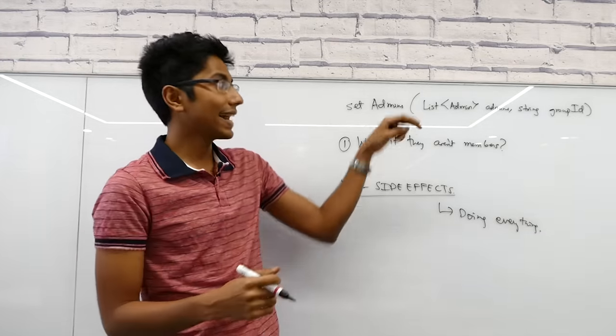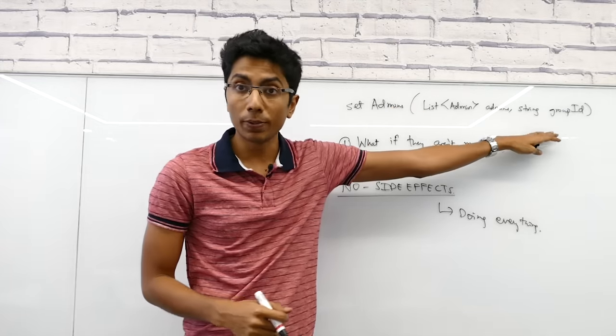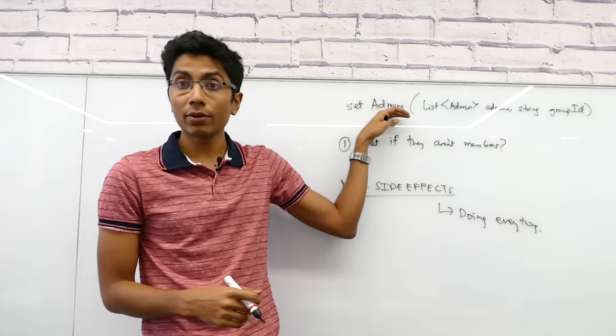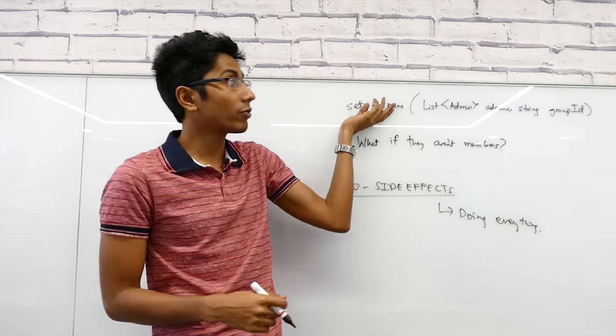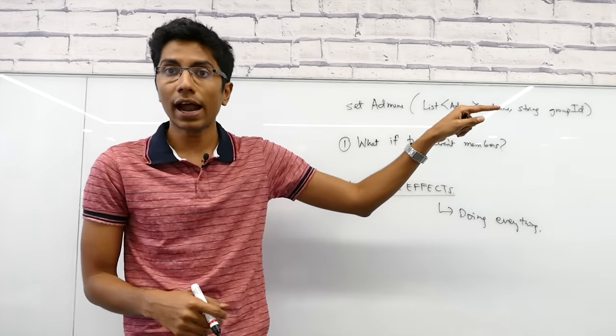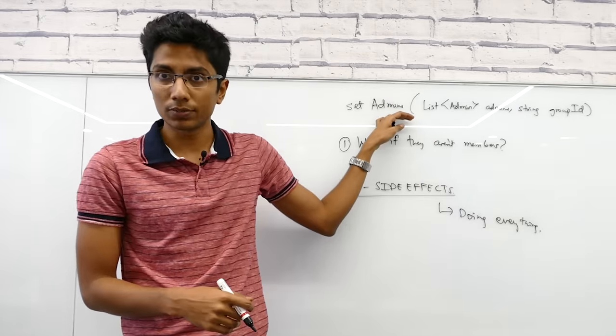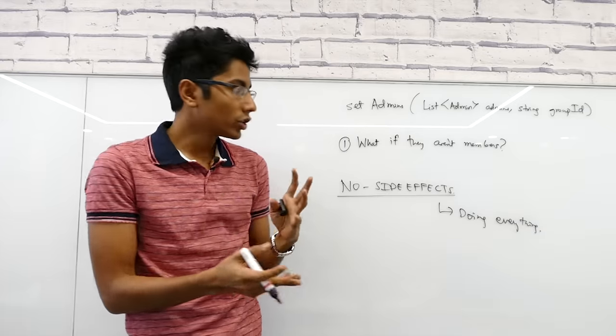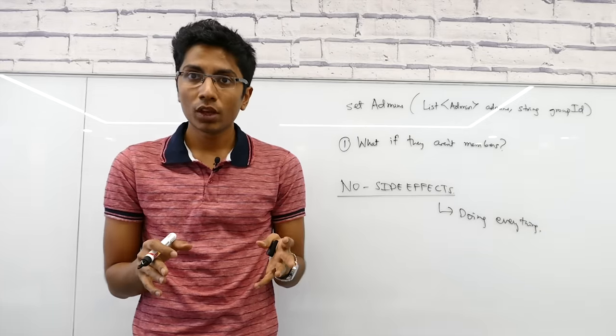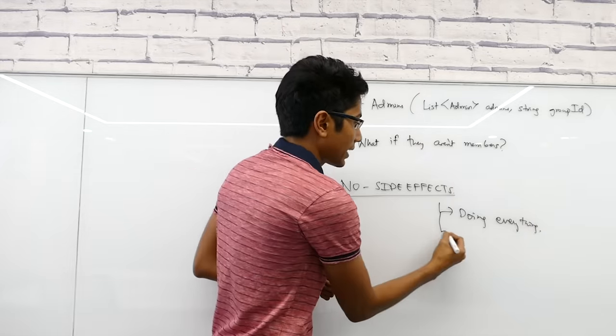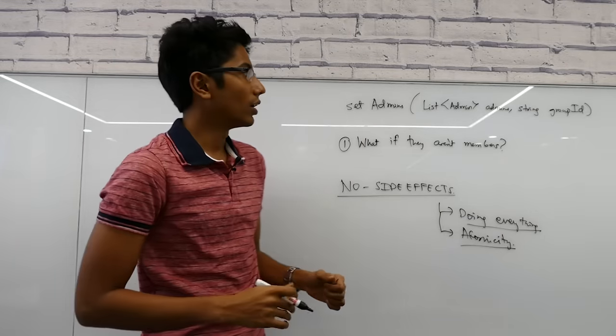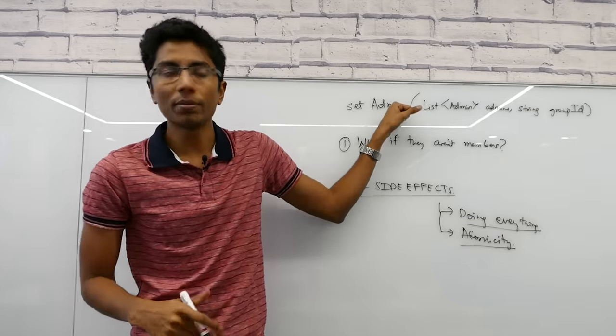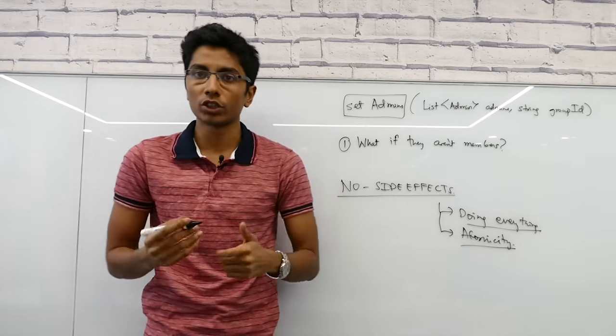The second, more important reason for a side effect is atomicity. When I say set admins, I need to create a group. What if I pass in set admins, it fails, then I create a group? Who's going to set the admins? What if I create the group and somebody else sets admins, and now these guys can't be admins? Depending on the use case, you might need atomicity. That is the second case for side effects. However, even with atomicity and doing everything, the naming should definitely be better. There's no excuse for poor naming of a function.